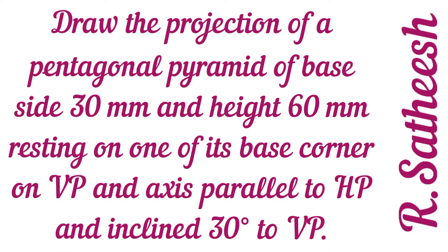Welcome students. The problem is: draw the projection of a pentagonal pyramid of base side 30mm and height 60mm, resting on one of its base corners on HP, with axis parallel to HP and inclined at 30 degrees to VP. Since it is inclined to 30 degrees to VP only, the problem is inclined to one plane.